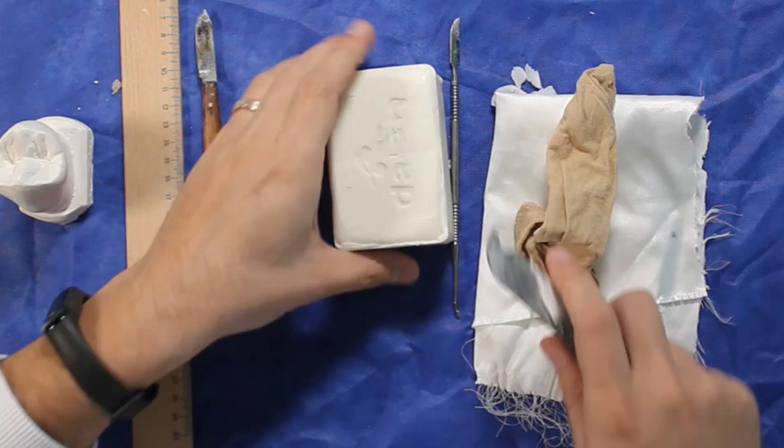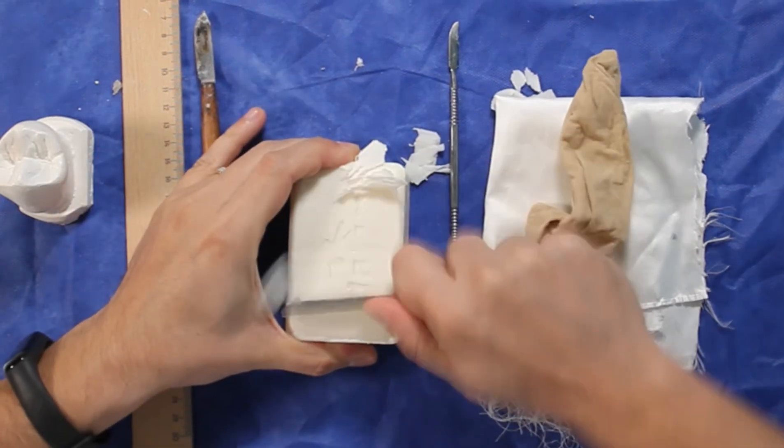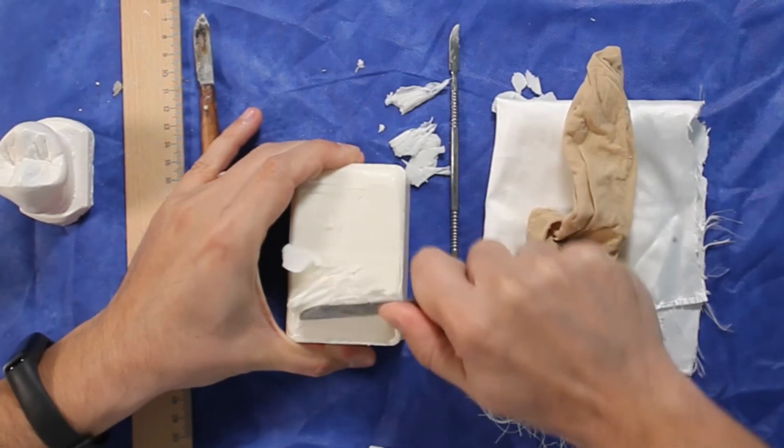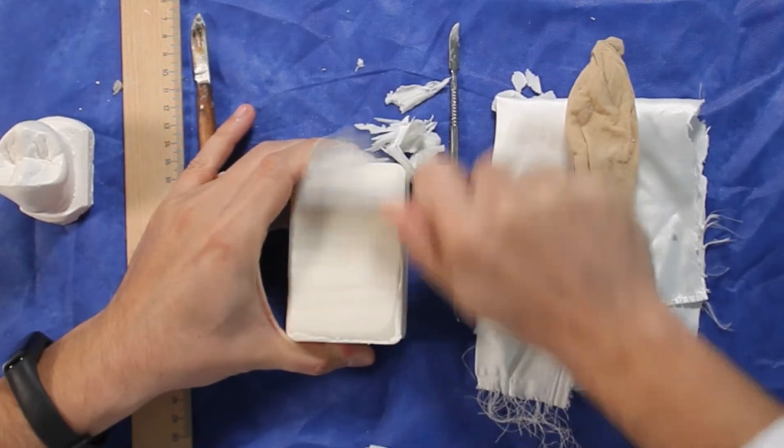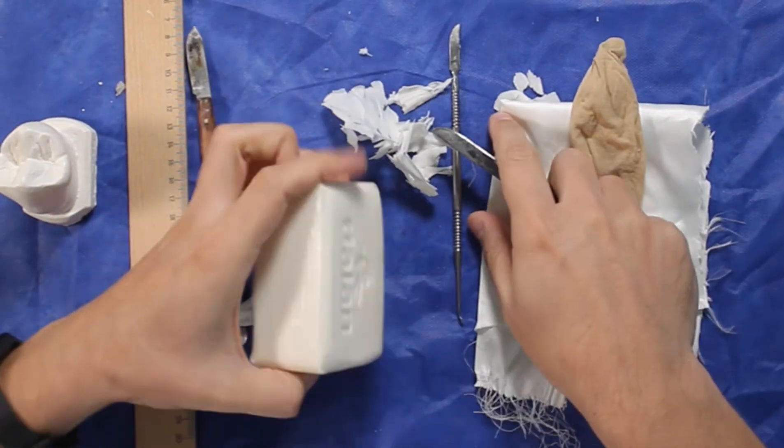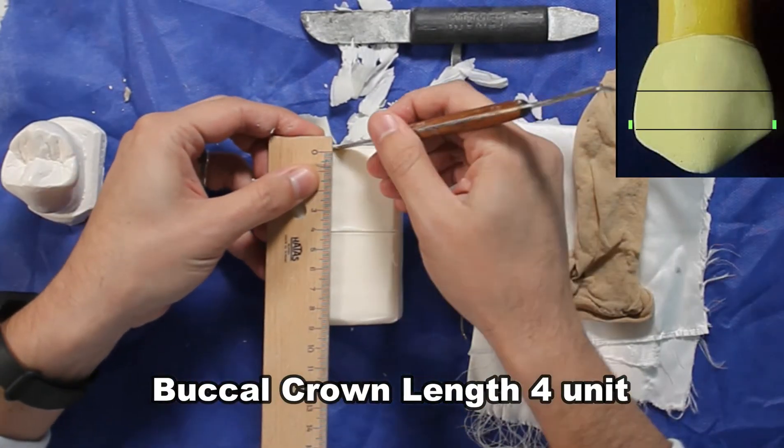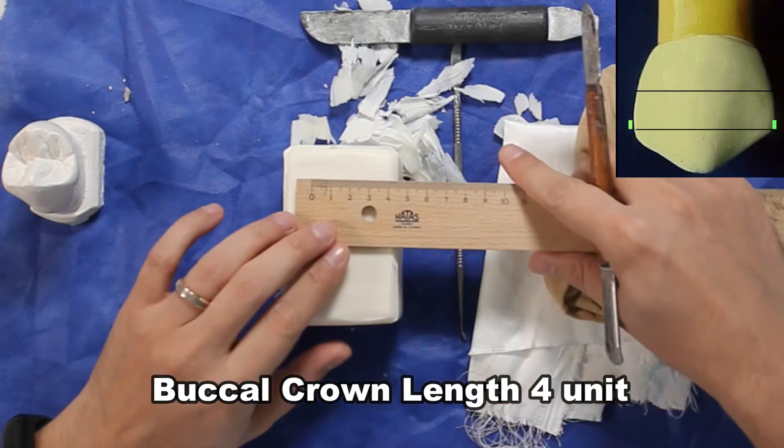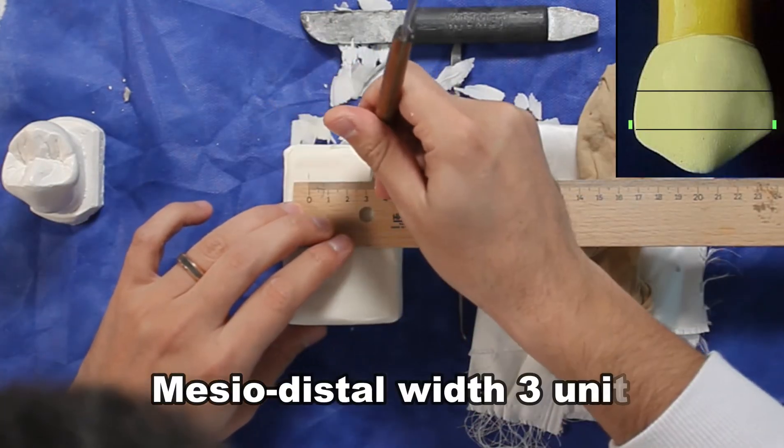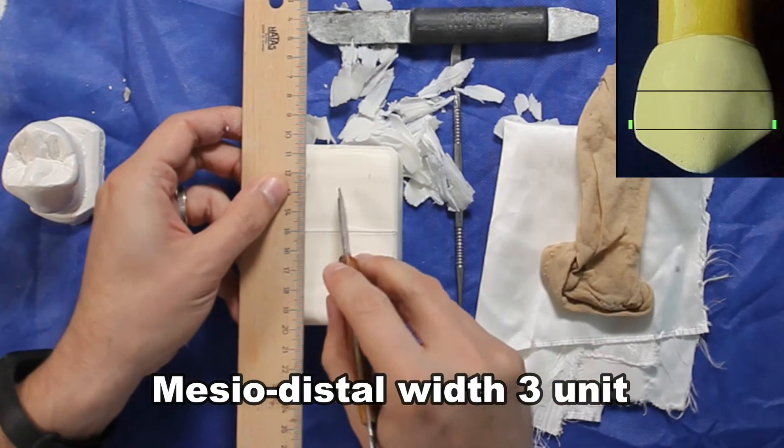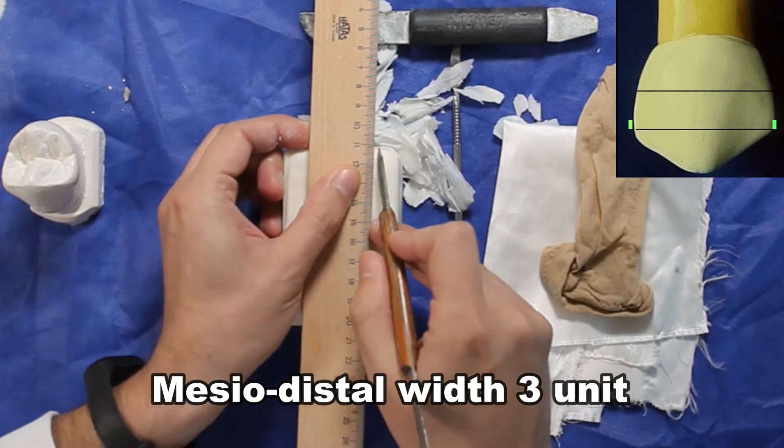Hey everyone, today we will carve upper first right premolar. From now on we will say buccal phase instead of labial phase. Buccal crown length will be 4 units, mesodistal width is 3 units, and buccopalatinal thickness will be 4 units. So buccopalatinal thickness and buccal crown length will be the same.